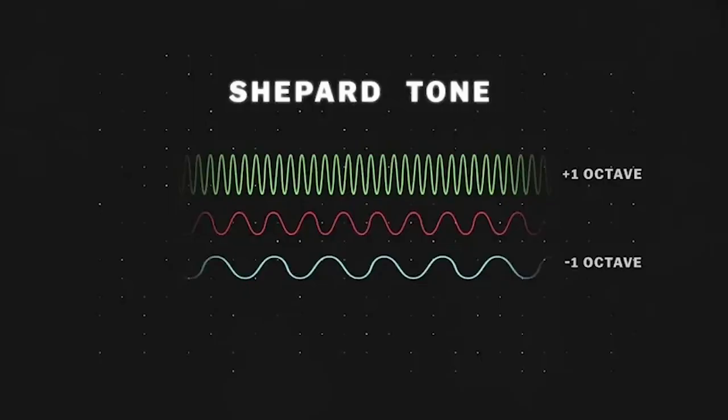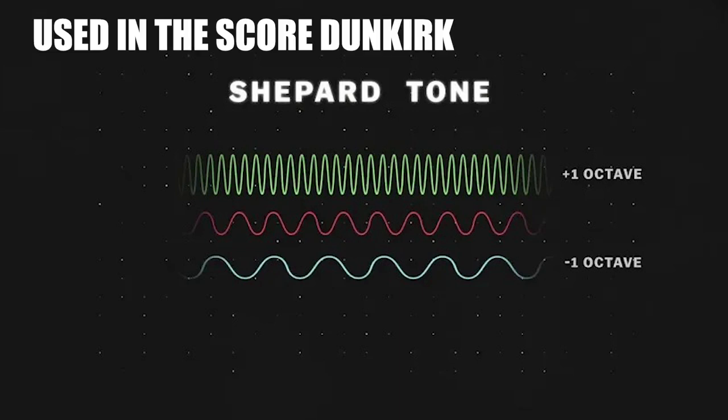In some of his scores, Hans used what's called Shepard tone. This consists of at least three octaves, all spaced an octave higher or lower than each other. This creates an audio illusion that the sound is always rising. He used this to create intensity, making the audience sit on the edge of their seats.